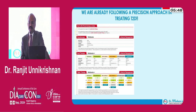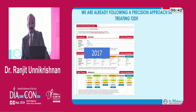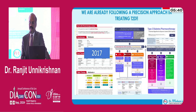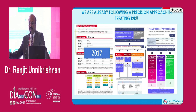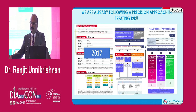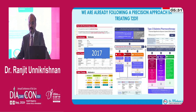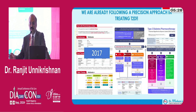Please bear in mind we are already following a precision approach in treating type 2 diabetes. In the 2017 ADA guidelines on managing hyperglycemia in type 2 diabetes, it was metformin for everyone without exception. Contrast this to the 2024 guidelines, where certain groups of people have initial pharmacotherapy with a drug other than metformin — a GLP-1 receptor agonist or an SGLT-2 inhibitor. So we have already started adopting a precision approach in the treatment of type 2 diabetes.